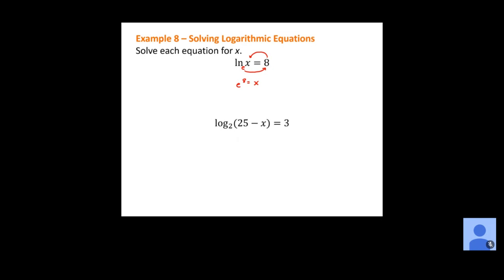For the next one, the base is 2. Take that 2, raise it to the power shown, and set it equal to everything inside the logarithm: 2 to the third power equals 25 minus x. Simplify: 8 equals 25 minus x. Subtract 25: negative 17 equals negative x. Divide by negative 1: x equals 17.